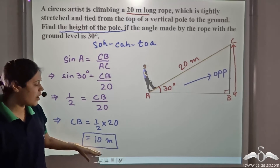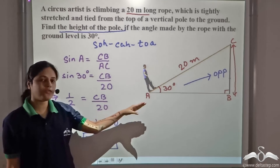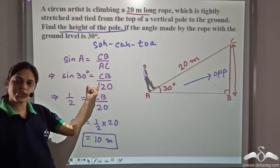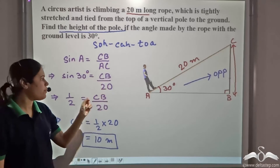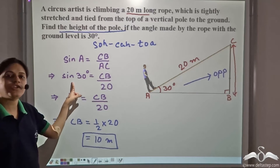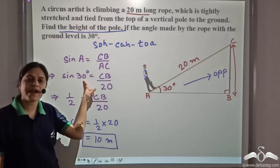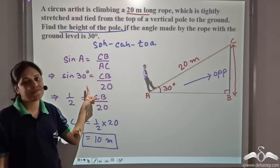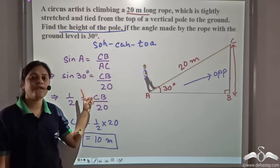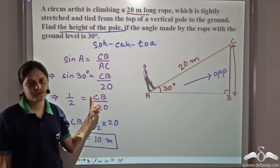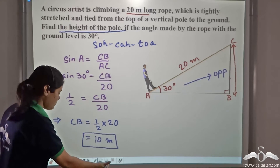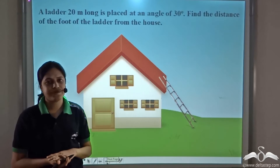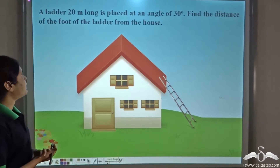You can see how easily we found the height of the pole by using the correct trigonometric ratio and the value of the trigonometric ratio for the standard angle thirty degrees. It is very important to determine which trigonometric ratio to use. Now let us study one more example. We have this problem here.